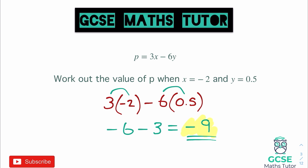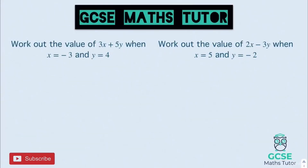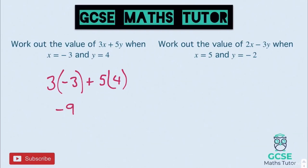Let's look at the answers to those practice questions. For the first one, we have 3 lots of negative 3, adding to that 5 lots of 4. So 3 lots of negative 3 is negative 9, and 5 lots of 4 is 20. Negative 9 add 20 gives us 11.